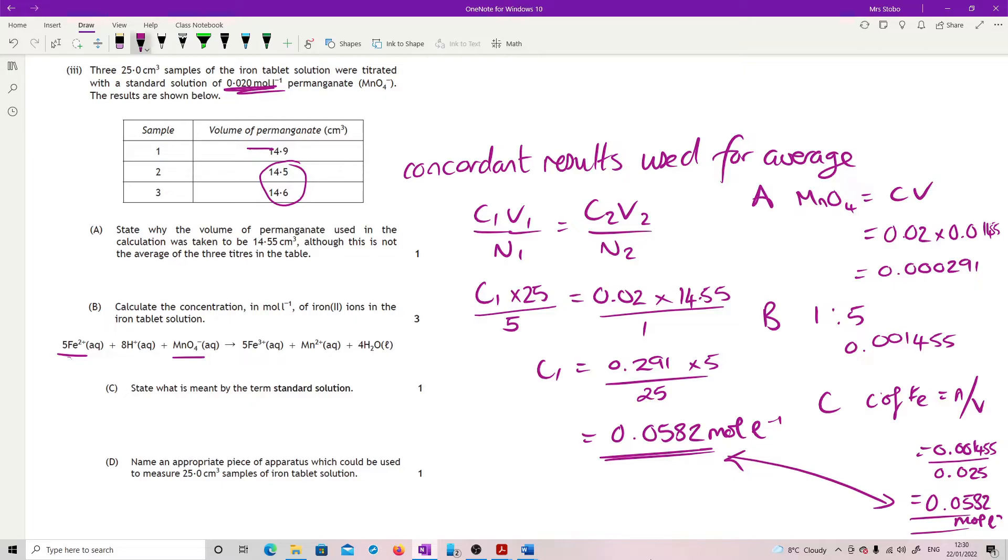State what it's meant by the term standard solution. This is just a KU point. We're just looking for accurately known concentration. So this is something that you have made up or you have been given, which is precisely what it says on the label. Name an appropriate piece of apparatus that would be used to measure the 25 centimeter cubed sample. That's just a pipette.